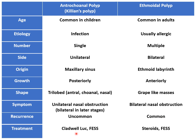Regarding treatment, initially Caldwell-Luc surgery was done for antrochoanal polyps, where the maxilla was opened from the anterior wall. Nowadays, with the advent of endoscopes, functional endoscopic sinus surgery (FESS) is the treatment of choice for antrochoanal polyps. For ethmoidal polyps, initial medical management is done in the form of steroids, which are the drug of choice. If the patient does not respond to medical management, then FESS is performed for ethmoidal polyps as well.